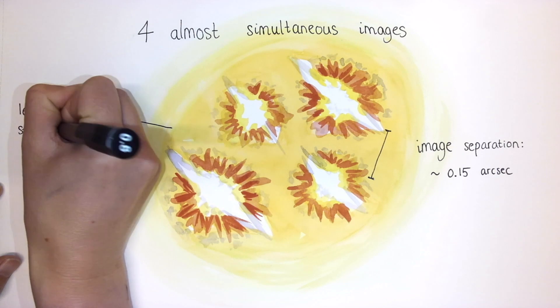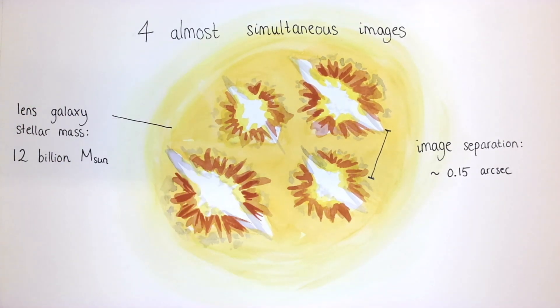We measured the stellar mass of the lens galaxy to be around 12 billion solar masses, quite light for a galaxy that acts as a gravitational lens.